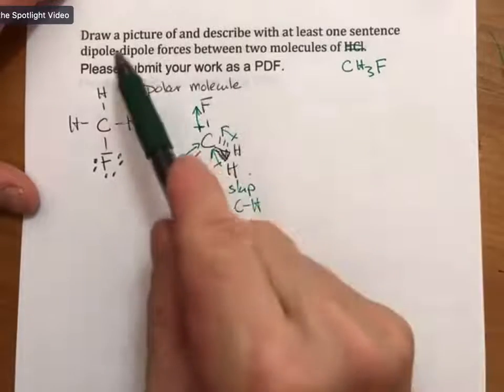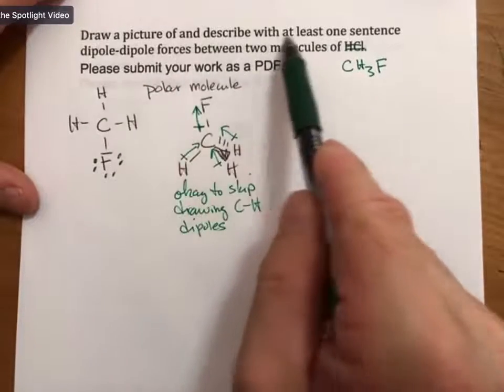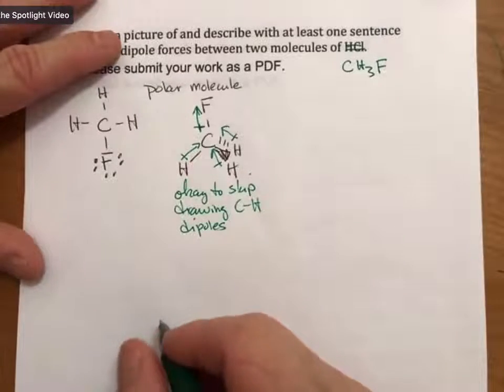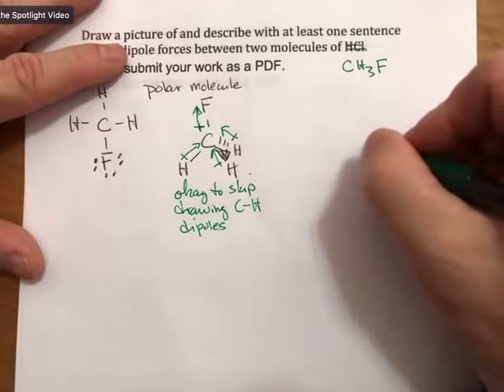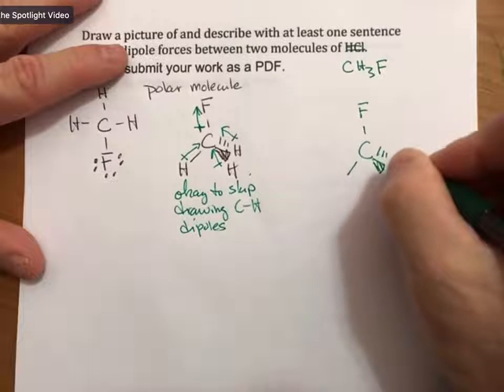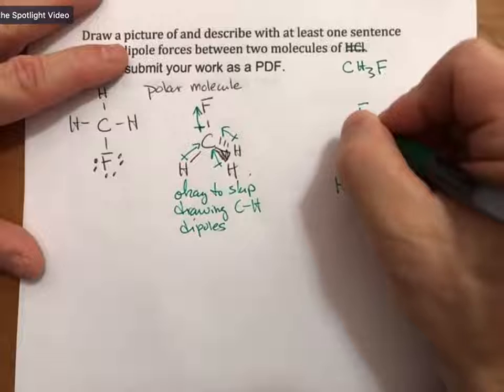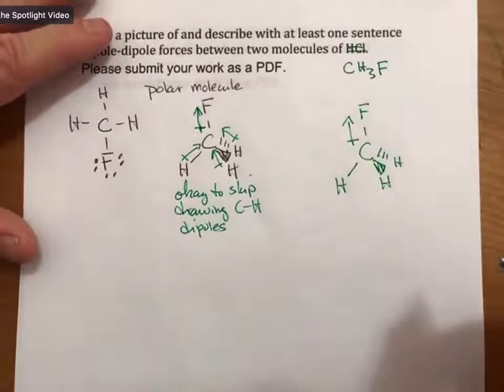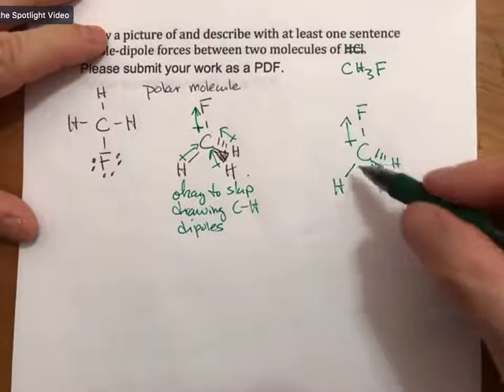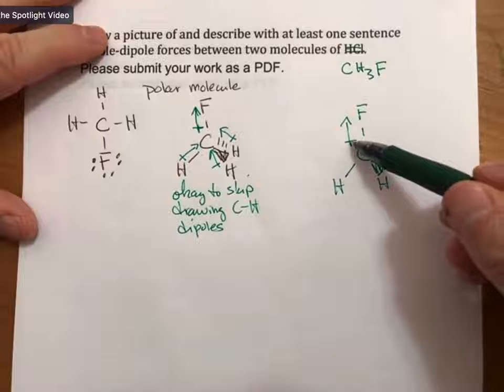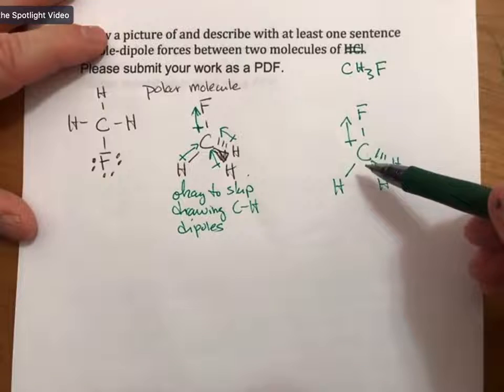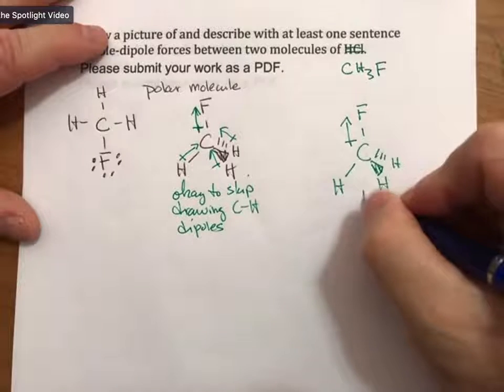So now I'm going to draw a picture of and describe with at least one sentence dipole-dipole forces. I'm going to do that right here. I'm going to draw this again. And then what you want to draw is a second molecule such that in some way the positive part of the dipole on this molecule is close to the negative dipole of the other molecule. So what you can do is you can put the F here.